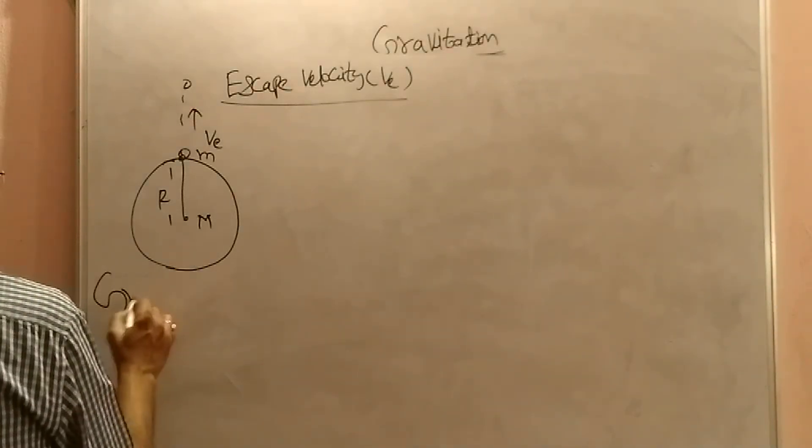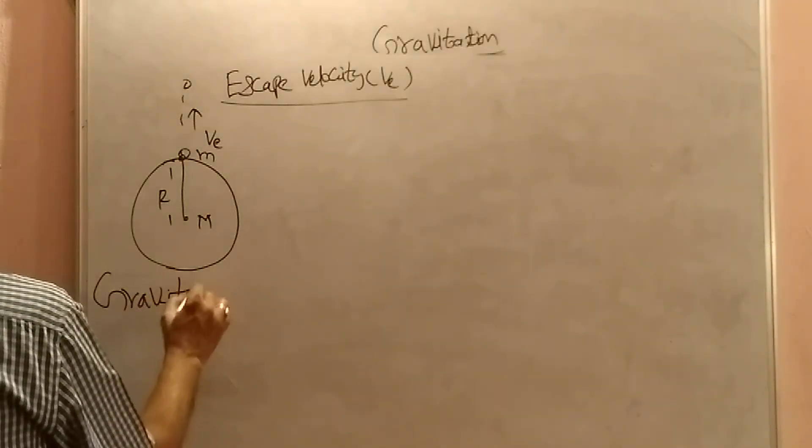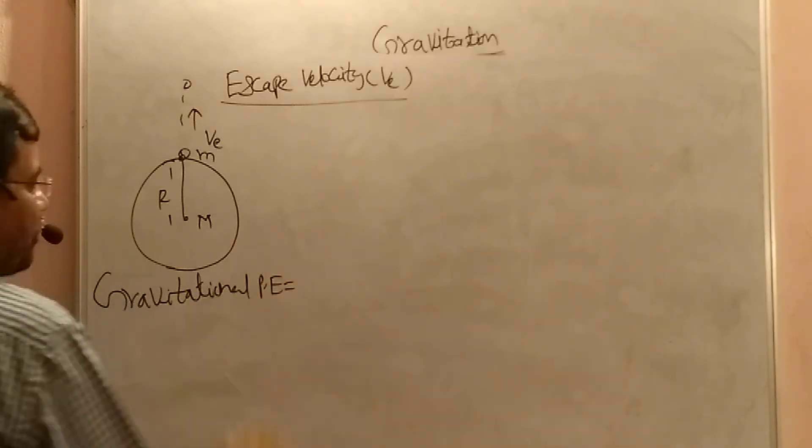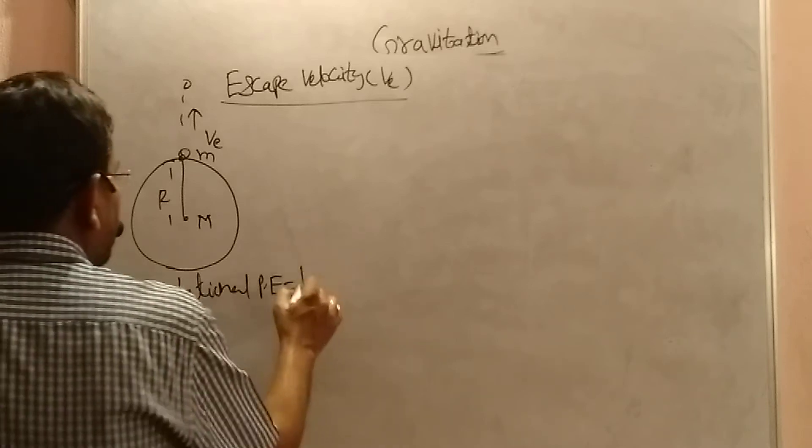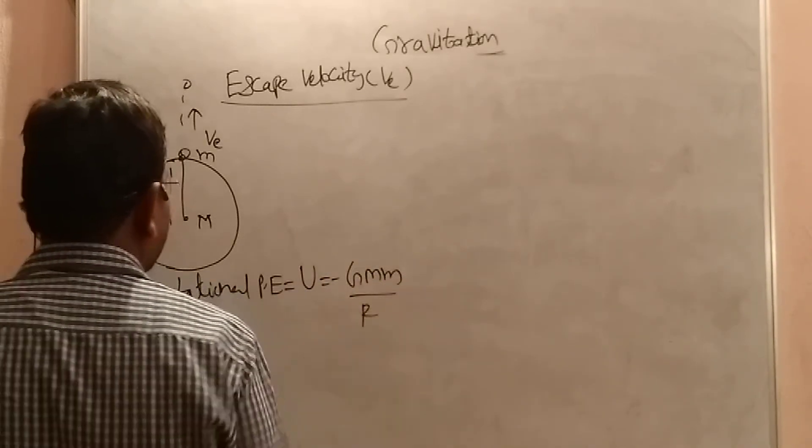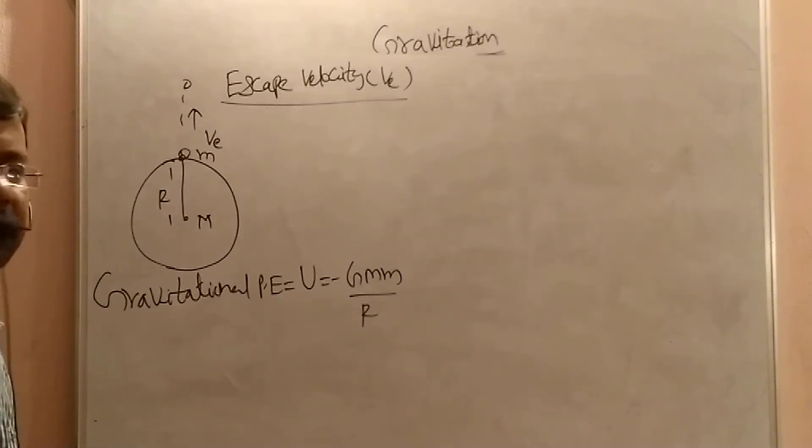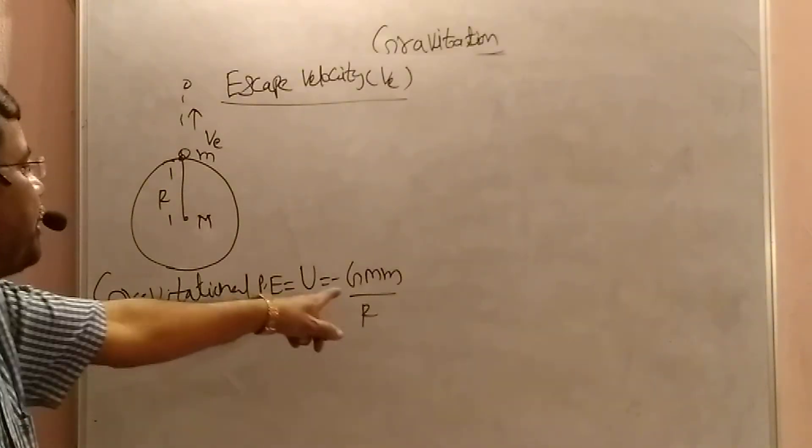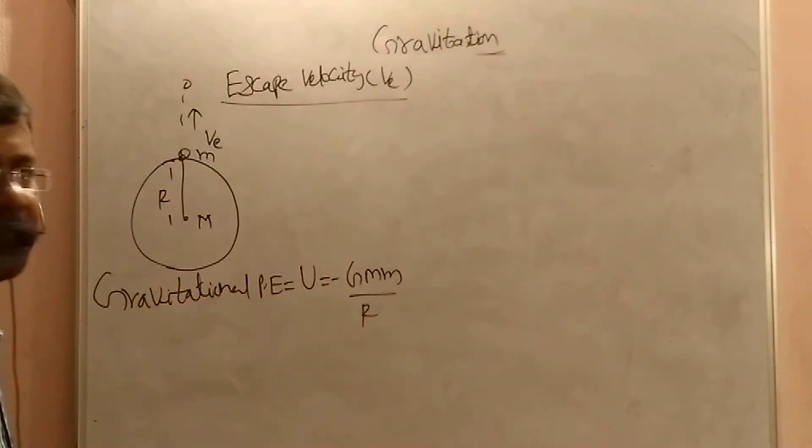So what is the gravitational potential energy? Gravitational potential energy, now only we are deriving: minus G capital M small m by r. So that U equal to minus G capital M small m by r. Minus represents what? That is due to gravitational force of attraction. So the magnitude is G into capital M small m by r.